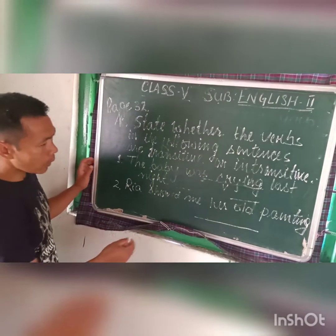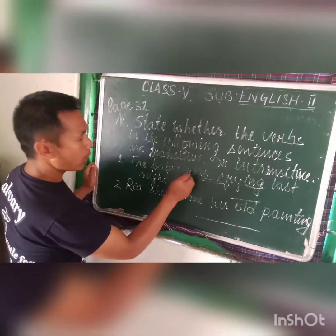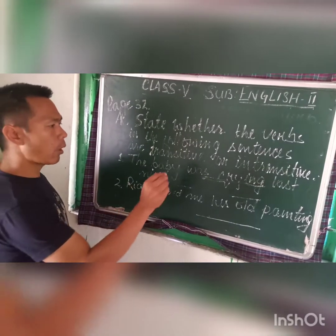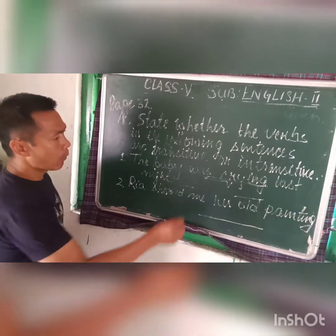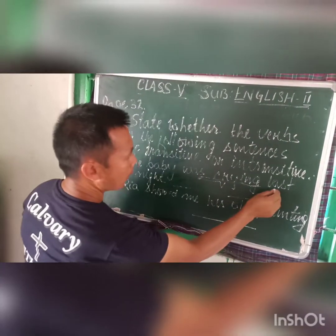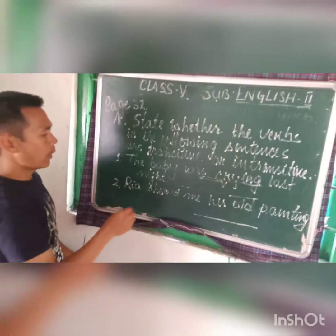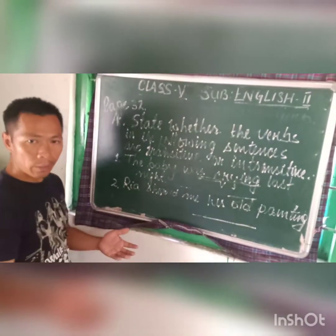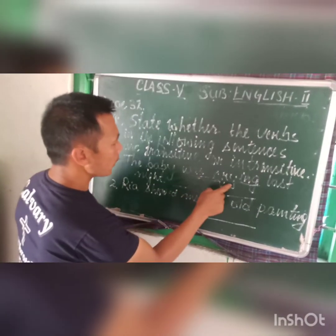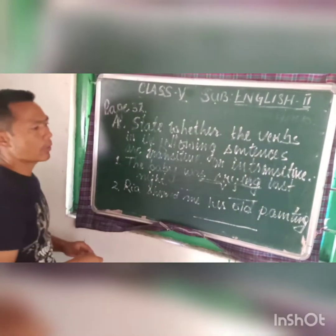In order to know whether this is transitive or intransitive, as I have already explained, there should be an object after the verb. Now, after 'crying,' what do we have? We have 'last night.' Is 'last night' an object or not? If it is an object, then 'crying' is a transitive verb. If it is not an object, then it is an intransitive verb.